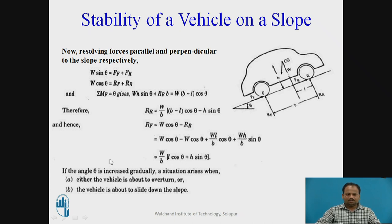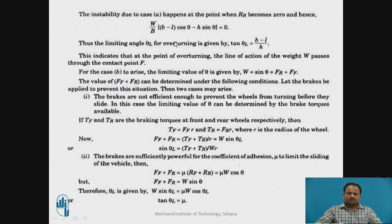There are two conditions. If angle theta is increased gradually, a situation arises when either the vehicle is about to overturn or about to slide down the slope. Instability due to Case A — overturning — happens when RR becomes zero. Therefore, the limiting value of angle theta_L for overturning is: tan(theta_L) equals (B minus L) divided by H. If theta exceeds this limiting value, the vehicle will overturn. This indicates that at the point of overturning, the line of action of weight passes through the contact point of the front wheel.